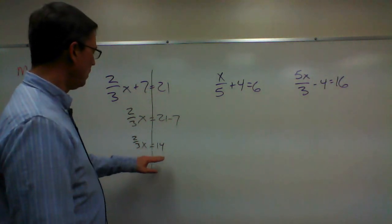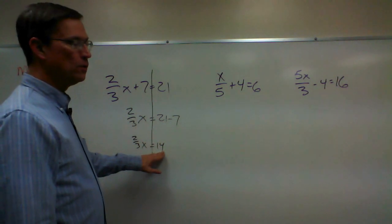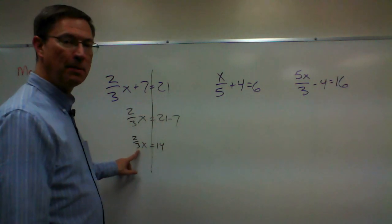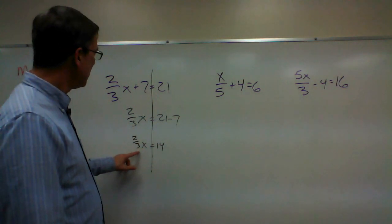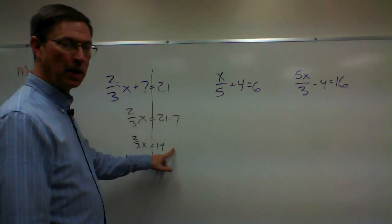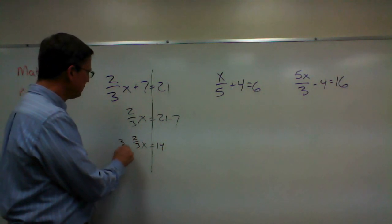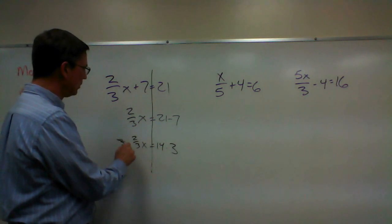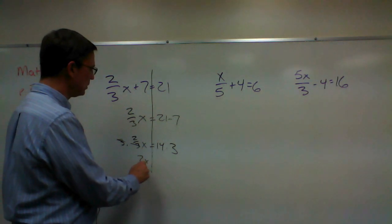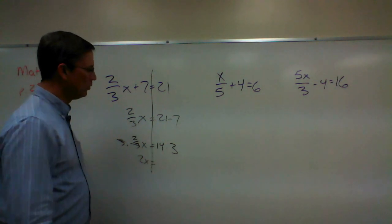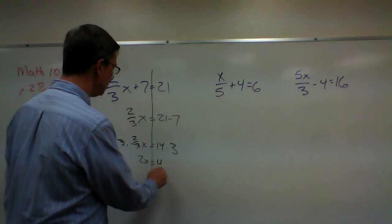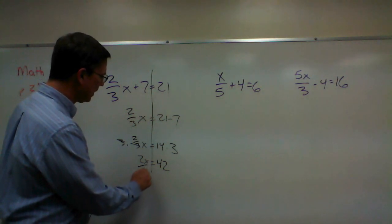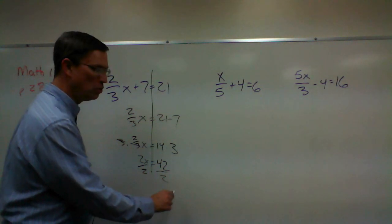Now what do we do to solve this? If you look back at page 27, they walk you through the steps and say whatever the denominator is, that is what we're going to multiply both sides by. So we would multiply this by 3 and multiply 14 by 3, and the 3 will cancel. We'll get 2X equals 42. Then the last step is to divide by 2 — I'm not going to do that step for you.